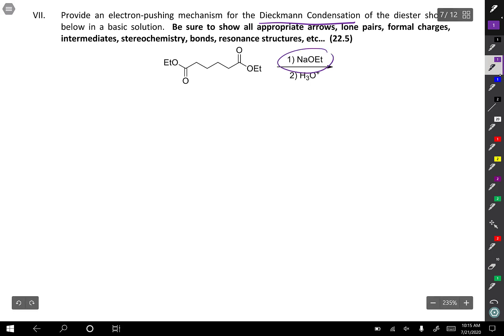We've got a base. We know that we have these alpha protons, alpha to this carbonyl of these esters that are acidic. We can make enolates. Let's figure out if we can make a ring.